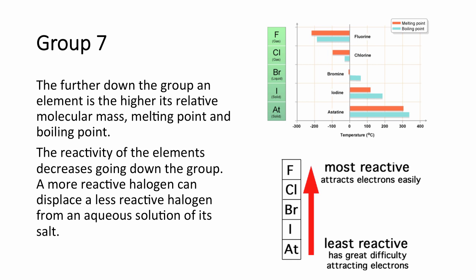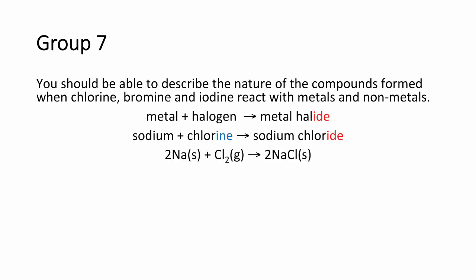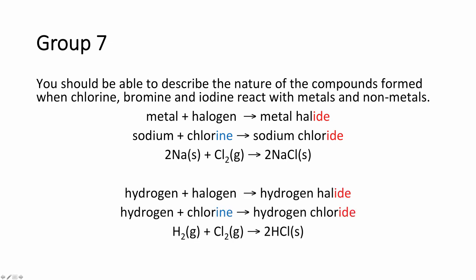A more reactive halogen can displace a less reactive halogen from a solution. You should be able to describe how halogens react with metals and non-metals. For example: metal plus halogen makes a metal halide — sodium plus chlorine makes sodium chloride. The ending '-ine' indicates the diatomic form of the halogen, for example chlorine is Cl₂. The ending '-ide' means it is a monoatomic anion — so chloride is a Cl⁻ ion. Halogens can also react with non-metals such as hydrogen to make a hydrogen halide — for example, hydrogen plus Cl₂ forms hydrogen chloride, HCl.